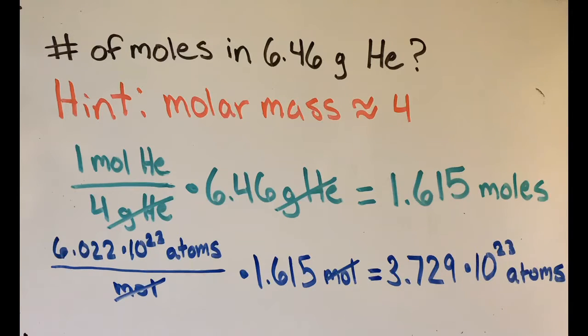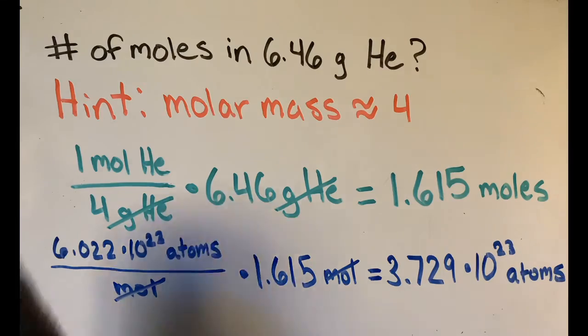That means that 6.46 grams of helium is equal to 1.615 moles, which is equal to 3.729 times 10 to the 23rd atoms.